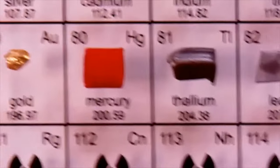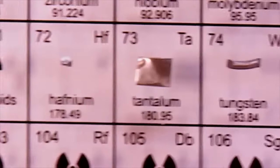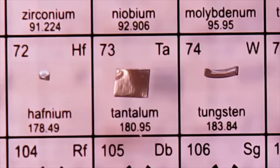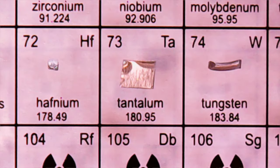So we've now done the lanthanides, so we have to head back into the main body of the periodic table and find element 72. So we've got to hafnium — hafnium is used in the nuclear industry, it's a particularly good absorber of neutrons. Then tantalum — you can see that lovely little bit of tantalum foil there. Tantalum I'm familiar with in electronics — it's used in tantalum bead capacitors, things that store small amounts of electrical charge.